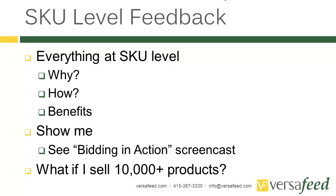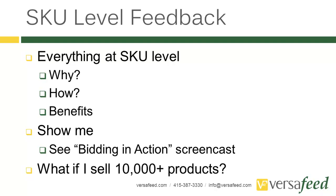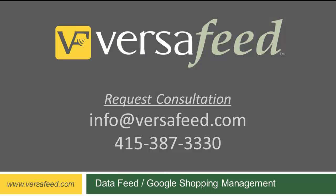Lastly, what if you sell 10,000 or more products? It's not a problem — we have clients that sell 100,000 products or even millions. The only reason we mention this is that Google has a hard limit of 10,000 SKU bids. If you sell more than 10,000 products, some groupings won't be able to drill down to SKU-level bids; less important items will be in a general group without per-SKU visibility. Thank you for watching. You can visit us at VersaFeed.com — we've got a great blog there. Thanks again for watching.